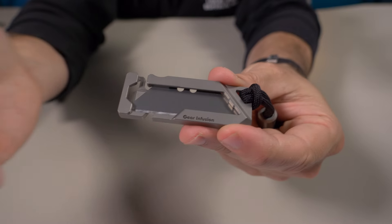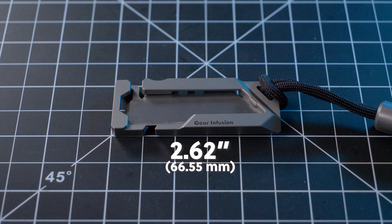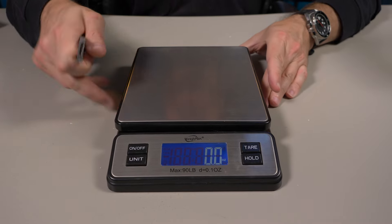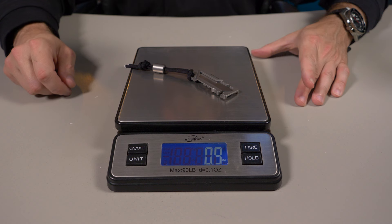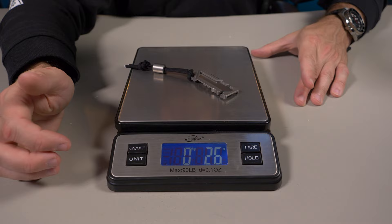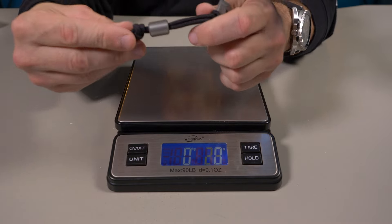Now let's talk about the dimensions. It comes in at 2.62 inches by 0.97 inches and has a thickness of 0.22 inches. Now let's weigh this bad boy. 0.9 ounces, and in grams that's 26 grams, so extremely lightweight. Keep in mind I'm weighing this with the lanyard and bead on it.